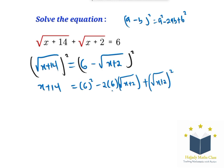So I have x plus 14 equals 36 minus 12 root x plus 2, plus the square and square root cancel out, so I'm going to have x plus 2.